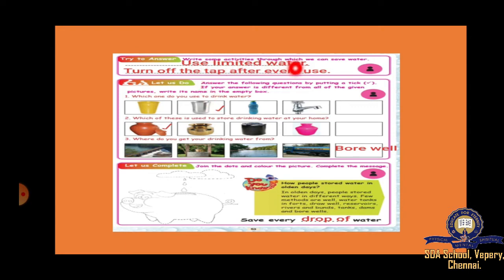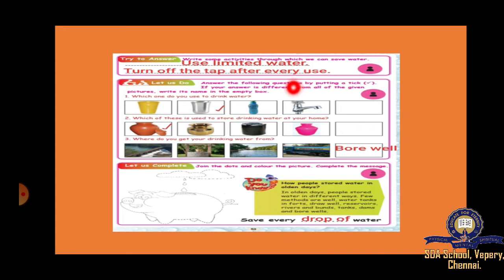Write some activities through which we can save water. The first thing is to use limited water — we should never overflow anything or misuse water. Another thing is to turn off the tap after every use. We should watch the taps and if water is overflowing, we should immediately turn off the tap. After every use, immediately turn off the tap. These are two important ways to save water.